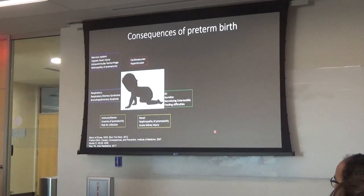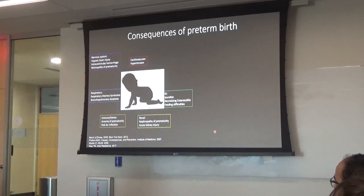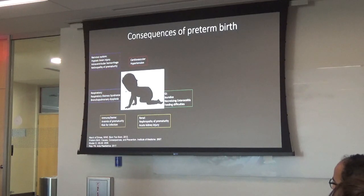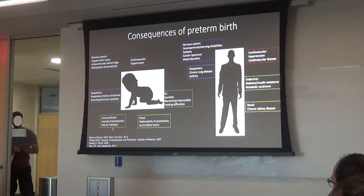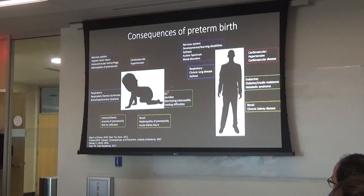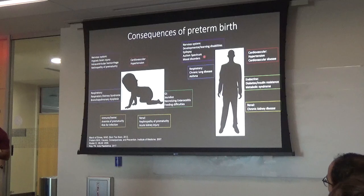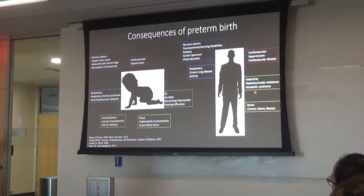Why does it matter if you're born prematurely? During development, a lot is happening in utero, and when a baby is born prematurely, no organ system in the body is spared. Infants can have nervous system problems including hypoxic brain injury, retinopathy of prematurity in the eyes, bronchopulmonary dysplasia in the lungs, and cardiovascular, renal, GI, and immune system changes. These early insults persist — these kids, if they survive their NICU stay, will have increased risk for learning disabilities, mood disorders, chronic lung disease, asthma, cardiovascular disease, chronic kidney disease, and metabolic syndrome as adults.